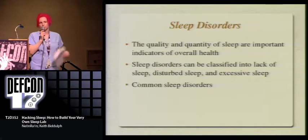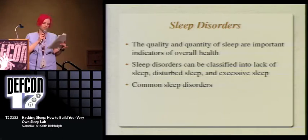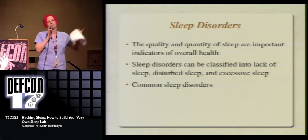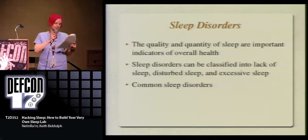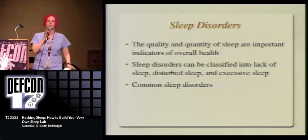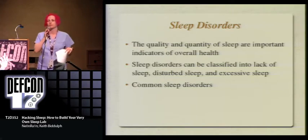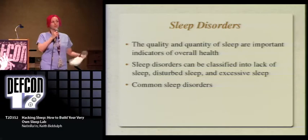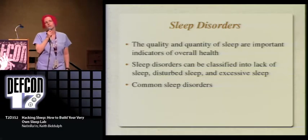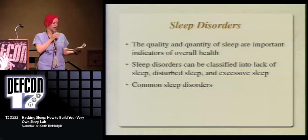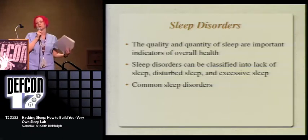Narcolepsy is often misunderstood. It's thought to be genetic, though it could also be from brain damage — they really don't know why. It causes individuals to fall asleep uncontrollably during the day for periods of less than a minute to half an hour, and these sleep attacks can occur at any time. Emotional situations especially trigger it. Most interestingly, narcoleptics skip all other sleep stages and go straight into REM sleep.